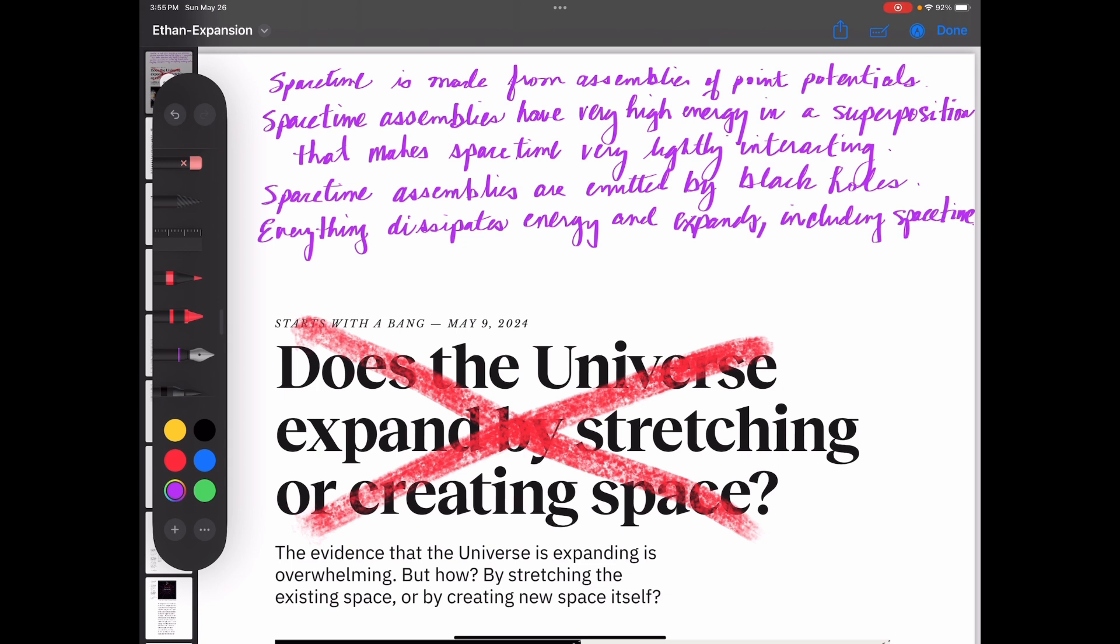And so somehow the scientists have gotten things confused that they understand that spacetime is expanding, but they've made that equivalent to the idea that the universe is expanding because they see photons coming through the universe and they redshift and they think that's due to the expansion of spacetime, which it is. But it's not that the whole universe is expanding. It's that we have fresh, new, extremely high-energy spacetime being generated in each galaxy, probably by the SMBH.